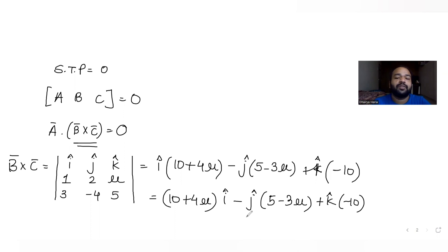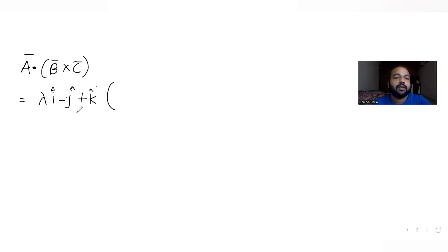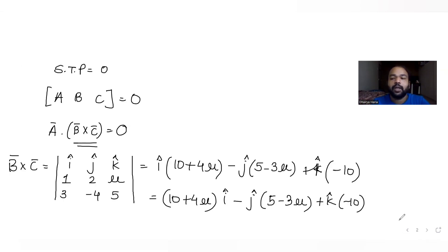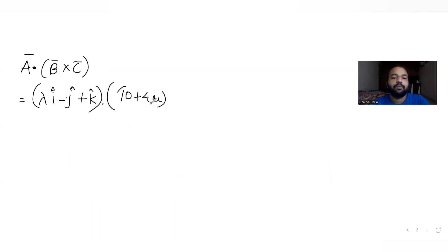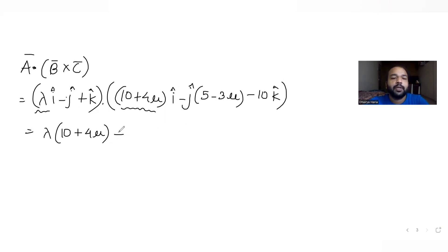Now we find the dot product of vector a with this cross product. Vector a is lambda i-hat minus j-hat plus k-hat, dotted with (10 + 4mu) i-hat minus (5 - 3mu) j-hat minus 10 k-hat. Taking the dot product, lambda gets multiplied by (10 + 4mu), then minus one times minus (5 - 3mu) gives plus (5 - 3mu), and plus one times minus 10 gives minus 10.